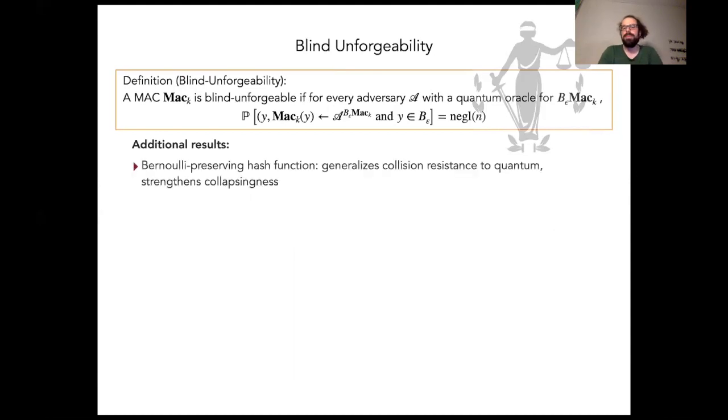We define a new security property for hash functions, which we call Bernoulli preserving. This property generalizes collision resistance to the quantum setting, and it strengthens a previous such generalization, which is called collapsingness. Using this notion, we can show that hash and MAC instantiated with such a hash function is blind unforgeable.